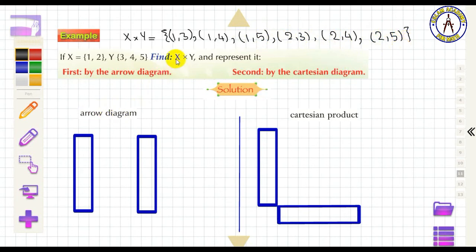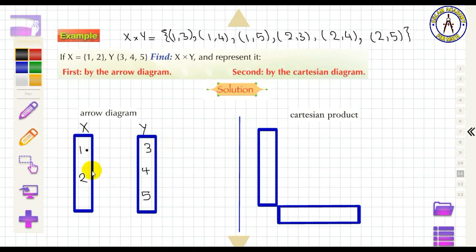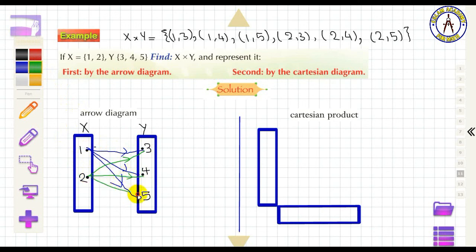To represent by an R-diagram for X × Y, write X at the first oval and Y at the second. Write elements 1, 2 on the left and 3, 4, 5 on the right. Draw arrows: from 1 to 3, 1 to 4, 1 to 5, then from 2 to 3, 2 to 4, 2 to 5.